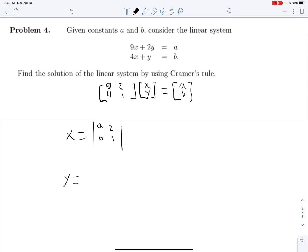And Y is the determinant of this matrix right here with the Y column replaced with AB. So 9421.